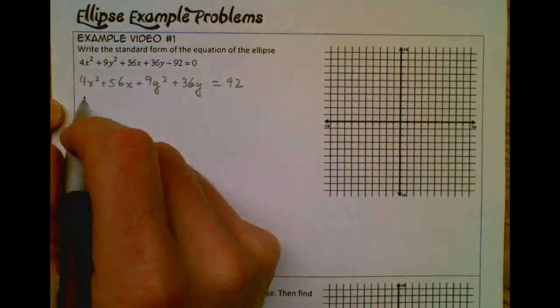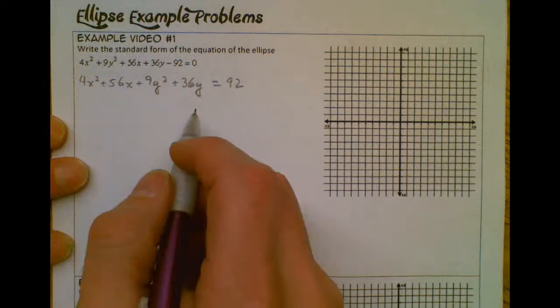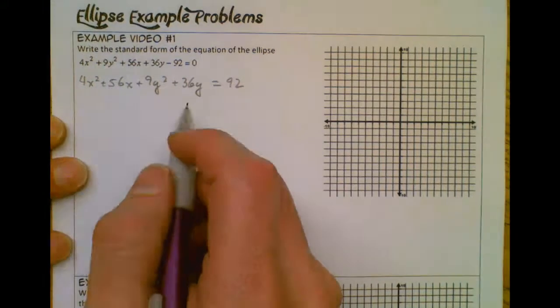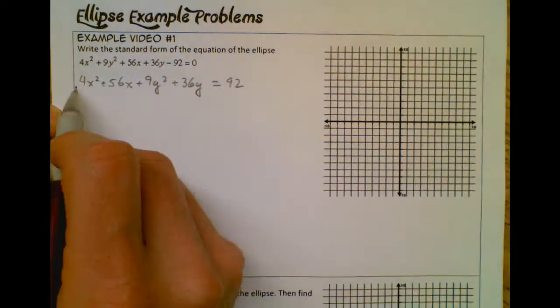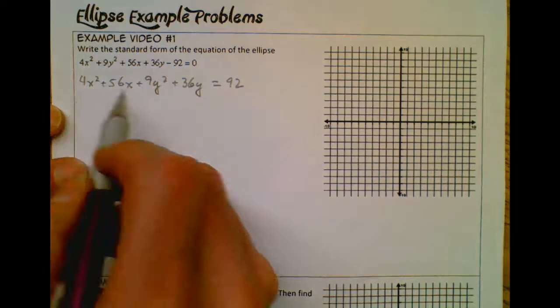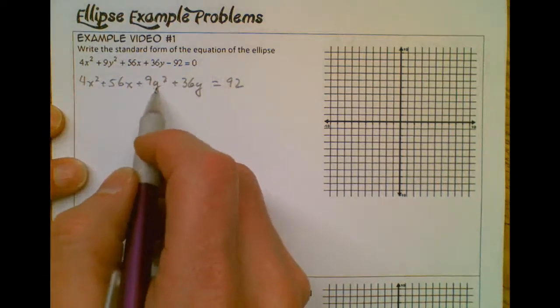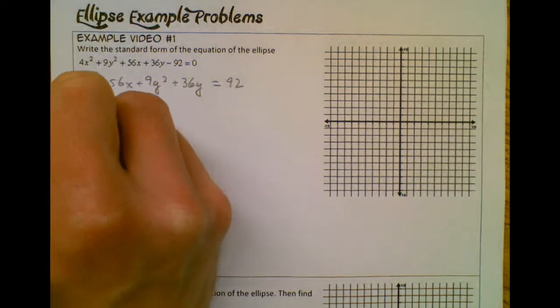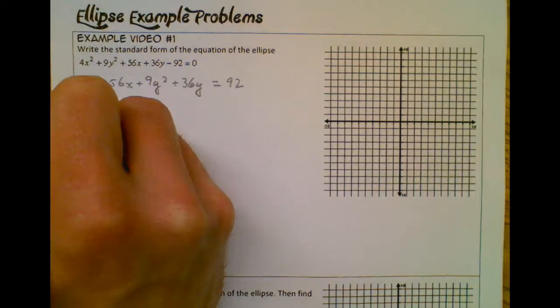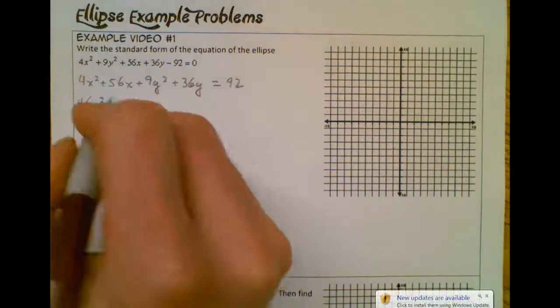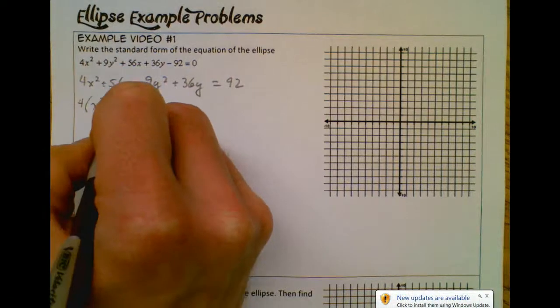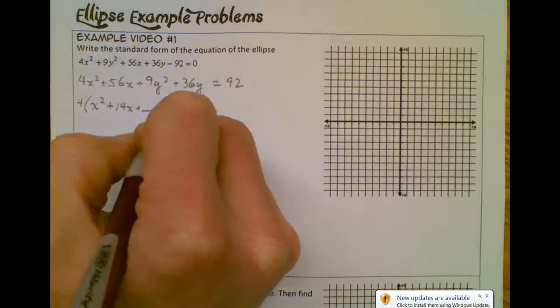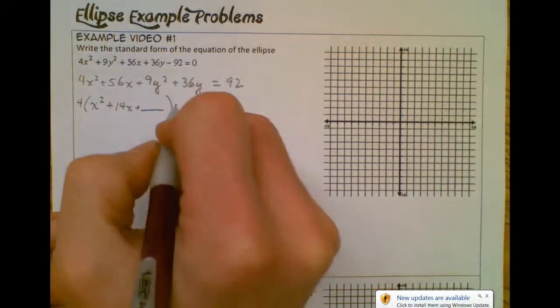Then I need to complete the square for the x terms and I need to complete the square for the y terms. And in order to complete the square, my leading coefficient, so for my x's it's 4, and my leading coefficient for my y's which is 9, it's got to be 1. So what I'm going to do is I'm going to factor out a 4 from my x terms, so now my leading coefficient is 1. So I'm going to have x squared plus 14x plus something that's going to go there. I'll fill that in in a second.